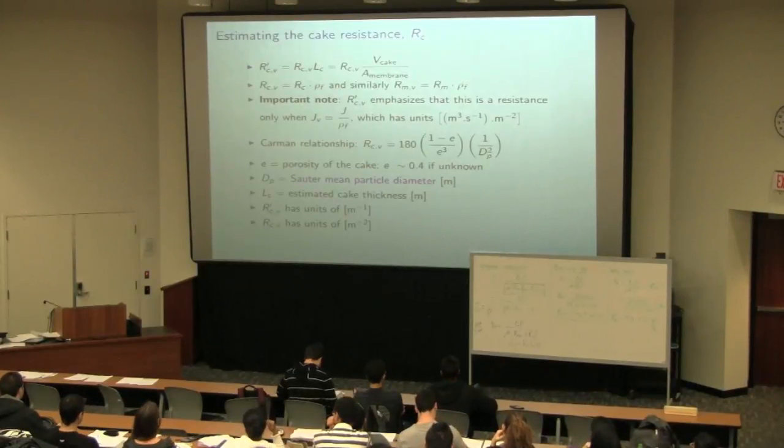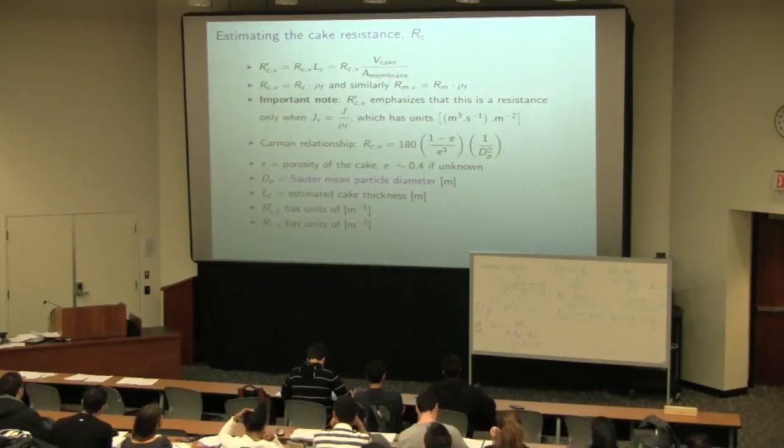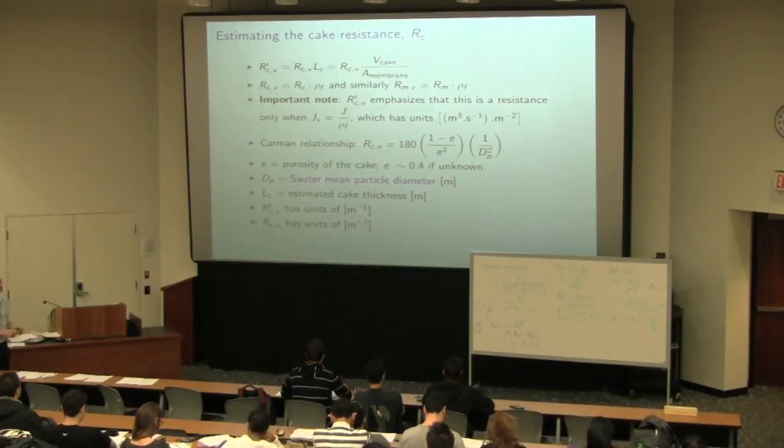Though you could have higher or lower porosities depending on the actual shape of the particles that you're caking up on the membrane. But in the absence of any given information or any extra knowledge, you could safely assume a value of 0.4 for the porosity factor.